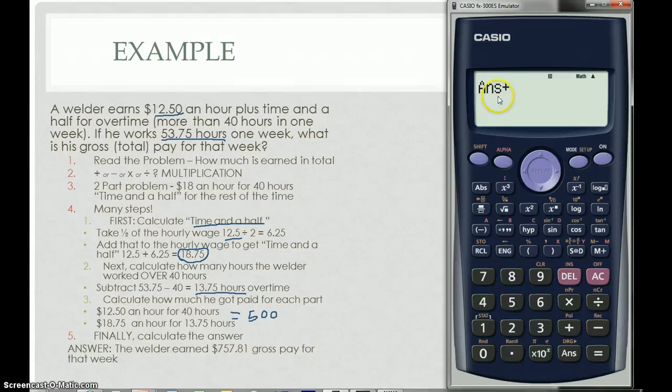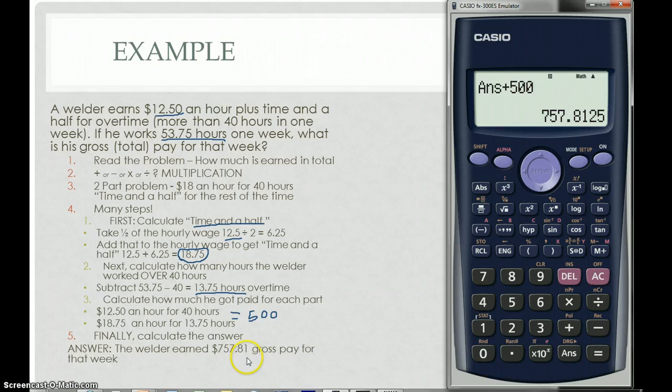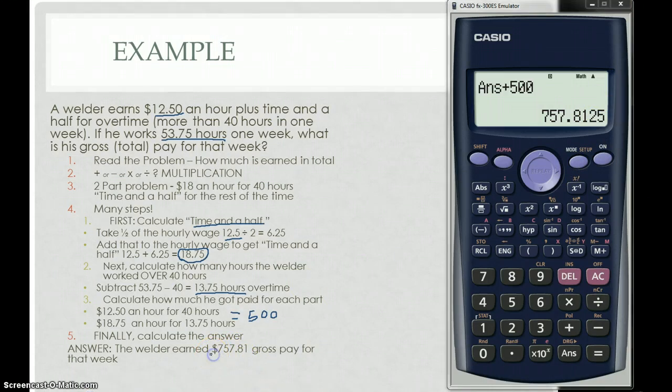If you just hit plus, it says ants. It says take my answer and add to it. So I add, and I get $757.81. Make sure you round to the nearest penny. You don't get paid in quarter pennies. So your employer gets to keep that quarter of a penny for themselves. And make sure when you do this that you also, again, include your units of dollars.